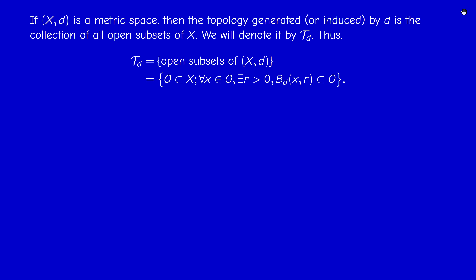T_D is the set of all sets O satisfying the condition of openness defined in a metric space. We see how T depends on D via the ball, because when we change the distance, the concept of ball changes. By Proposition 1.2, T_D satisfies three things: the empty set and whole space belong to T_D; union of elements of T_D is in T_D; intersection of two elements of T_D is in T_D.